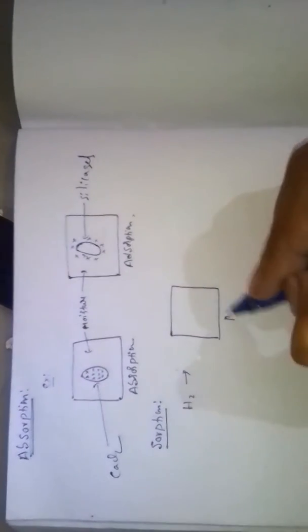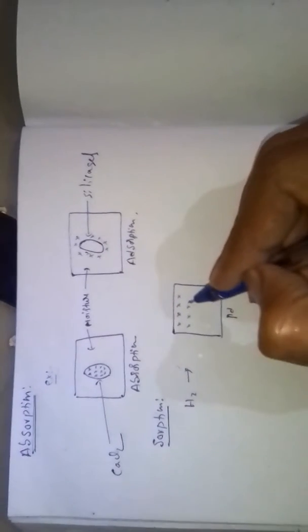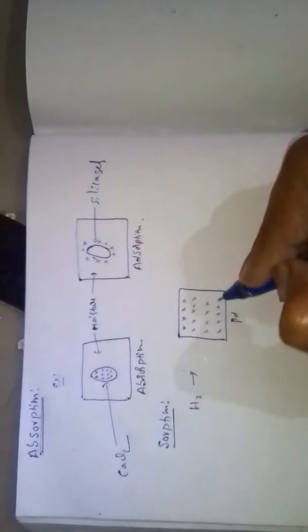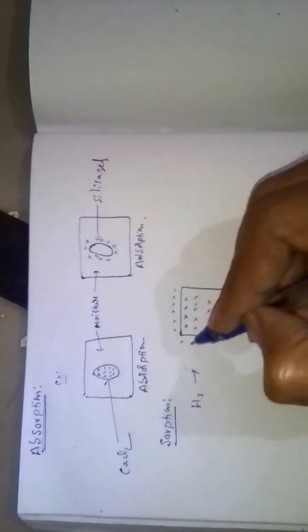This is palladium metal. Hydrogen gas uniformly distributes throughout the bulk of the solid, so absorption takes place. And also hydrogen gas adsorbs on the surface of the palladium metal.